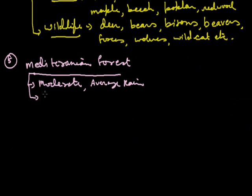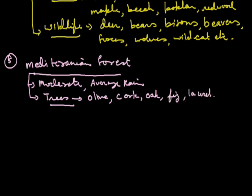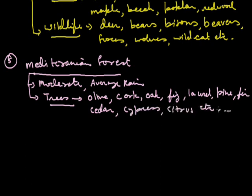The trees are widely spaced and are of medium height with thick bark. Small waxy leaves are there. The main lemon trees found in these regions are the famous holly tree, a part of their culture. Cork oak, fig, laurel, pine, fir, cedar, cypress, etc. are found here.